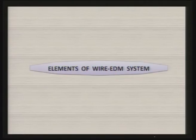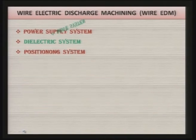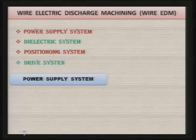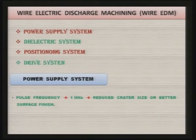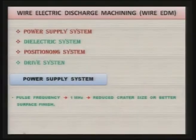The major elements of the wire electric discharge machining system are: power supply, dielectric system, positioning system, and drive system. The power supply uses a pulse power supply with very high frequency in the megahertz range. As seen earlier, high frequency leads to much smaller crater size, giving much better surface finish compared to normal EDM. The small wire size also limits current-carrying capacity, so very high currents cannot be used.